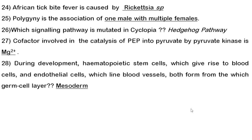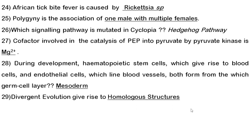Twenty-eighth question: during development, hematopoietic stem cells (which give rise to blood cells) and endothelial cells (which give rise to blood vessels) come from the mesodermal germ layer. Know the list of cells and organs originating from ectoderm, endoderm, and mesoderm. From which germ layer do extra-embryonic tissues come?